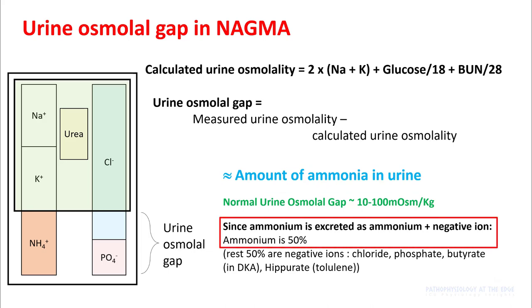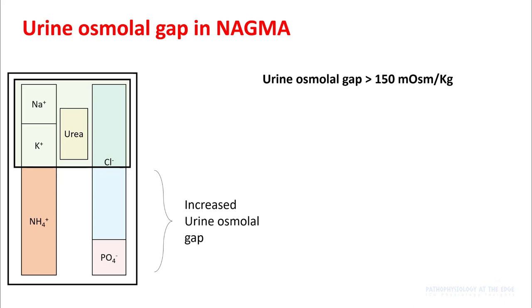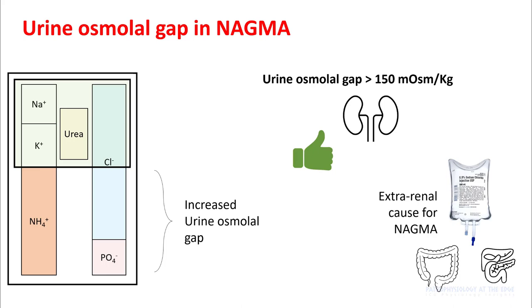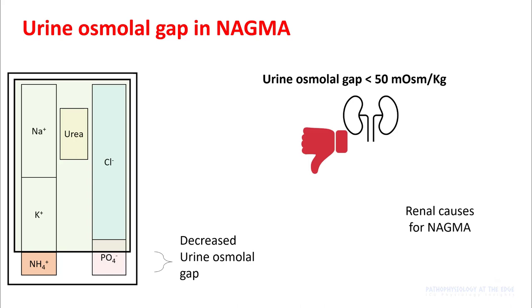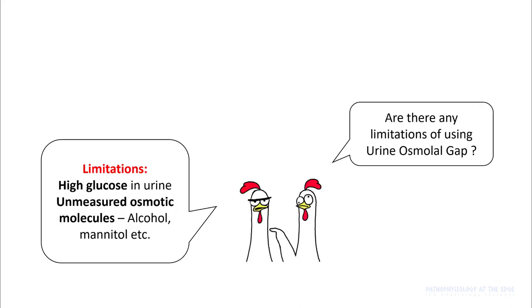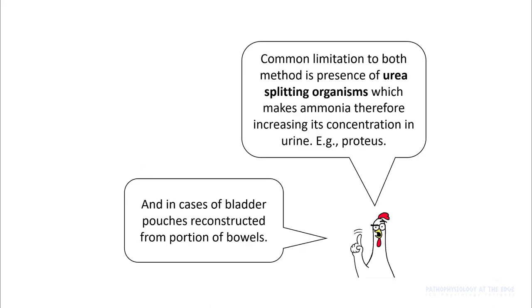The urine osmolal gap represents the amount of ammonia in the urine, and you don't have to worry about the negative charge because it can be any other chloride, phosphate, or organic acid. About 50% of the urine osmolality gap would be from ammonia. So if you have increased ammonium production, you have an increased urine osmolality gap. If your urine osmolality gap is more than 150, your kidneys are doing a great job and you have extra-renal causes. If it is less than 50, your kidneys are not doing a good job and you have renal causes. Limitations include high glucose in urine and unmeasured osmotic molecules like alcohol or mannitol, and urea-splitting organisms like Proteus, which can make ammonia from urea and increase its concentration, making your urine osmolality gap look falsely normal. In ileal conduits, the portion of ileum can absorb ammonia and falsely reduce the ammonium ions.